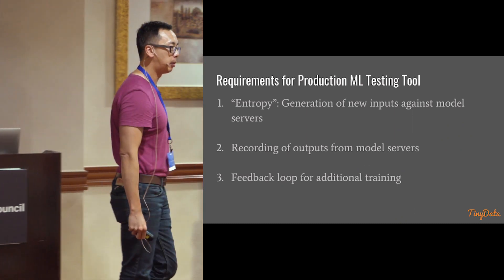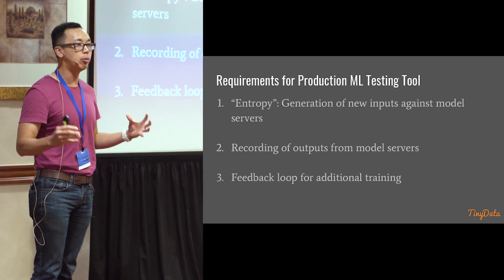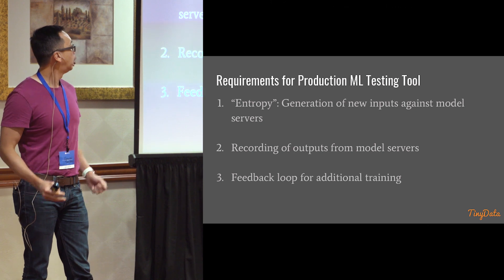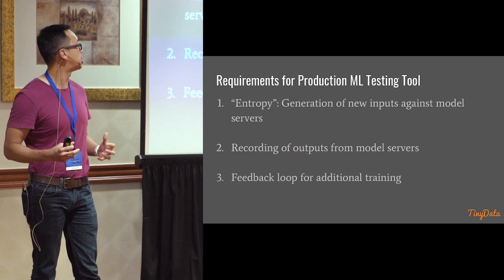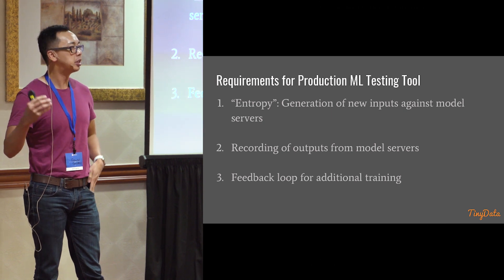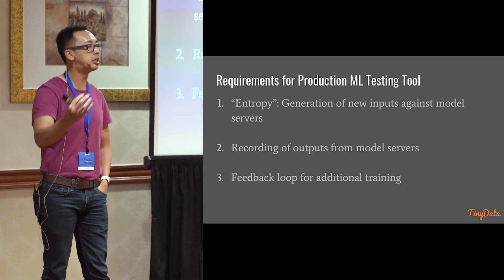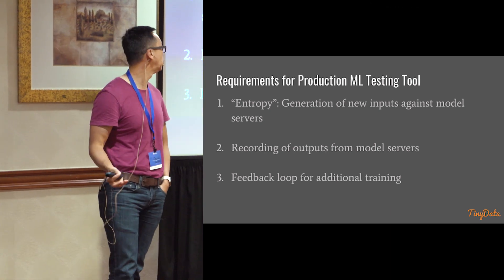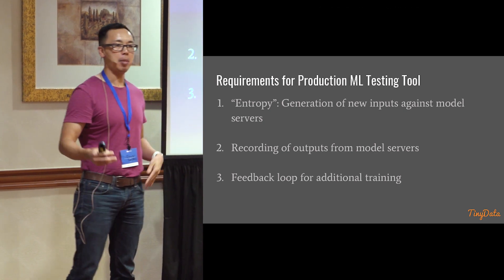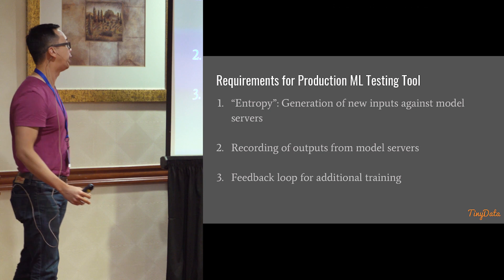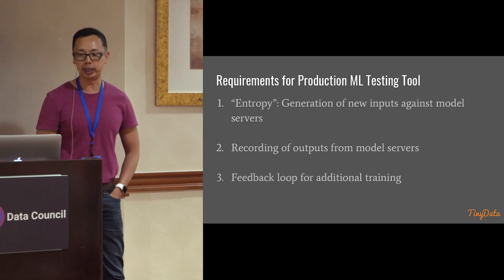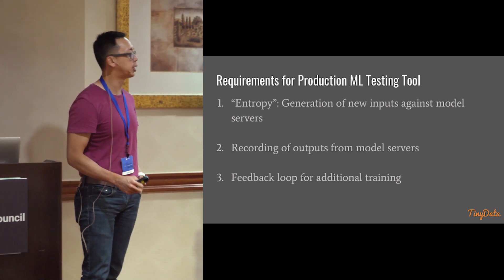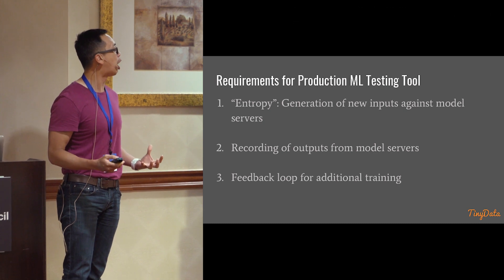So we went about building a production machine learning testing tool with three requirements. One: generate new inputs against model servers — given a model, generate new unseen inputs at the production level. Two: record outputs from the models. Three: have a feedback loop where outputs can be fed back into the training system. Today I'll mostly be talking about number one — the steps we took to engineer new inputs against model servers.